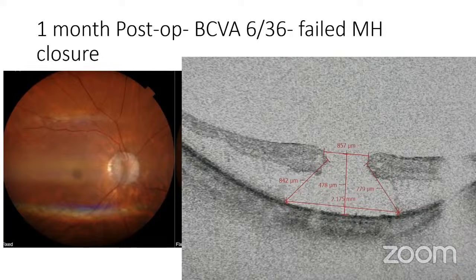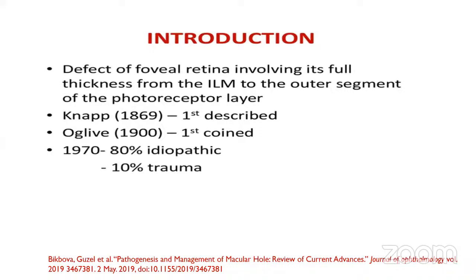Introduction: a macular hole is a defect of foveal retina involving its full thickness from the ILM to the outer segment of the photoreceptor layer. The term was coined by Ogilvie in 1970.